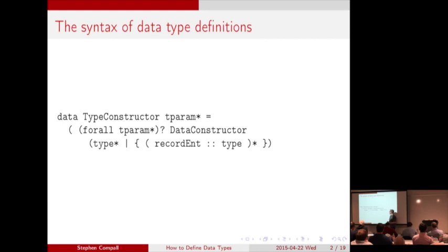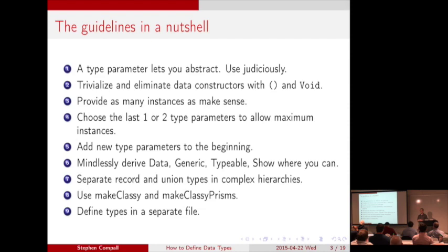But it's one thing to know about each of these syntactic things — notwithstanding the forall thing I promised we were not going to talk about — and it's another thing to know when you want to use them. Like, when you want to use Either instead of defining your own data type, when to introduce type parameters, what type class instances to write, what shortcuts to follow. That's what we're going to be talking about: a set of rules of thumb. Just basic tips to keep in mind. The source code repository has examples. There are nine tips total.